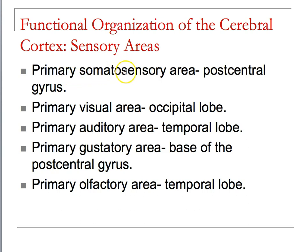Now I want to switch our attention to the cerebral cortex and specifically the sensory areas and their responsibilities. The primary somatosensory area is called the postcentral gyrus. The primary visual area is in the occipital lobe. Our primary auditory areas are in the temporal lobe. Gustation is going to be the base of the postcentral gyrus.